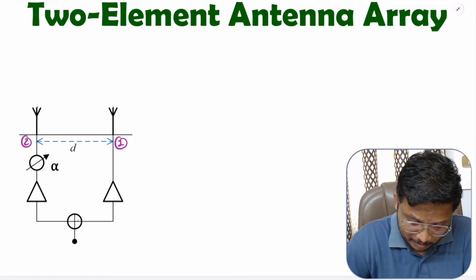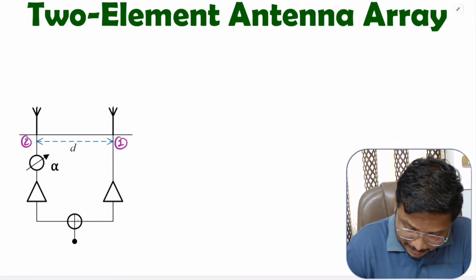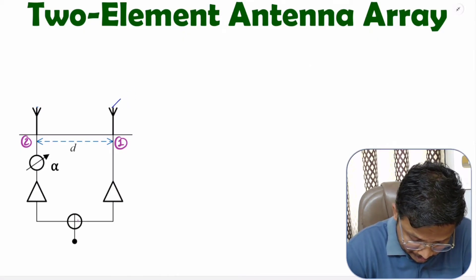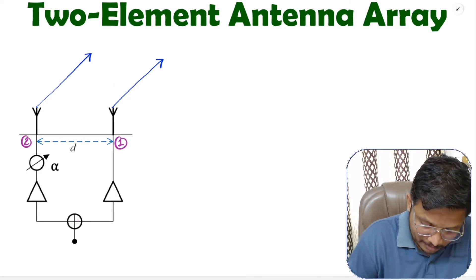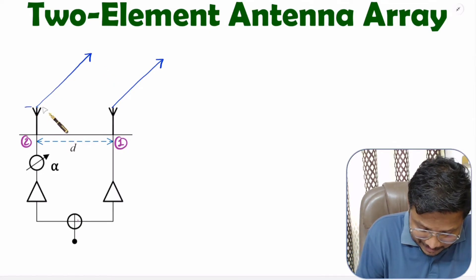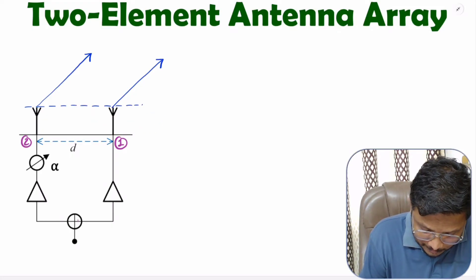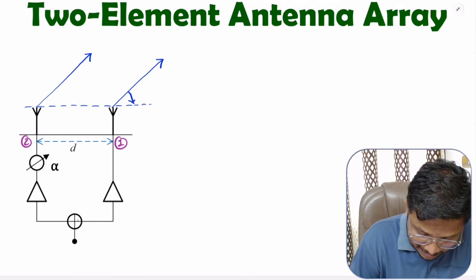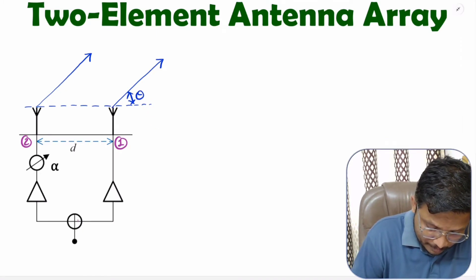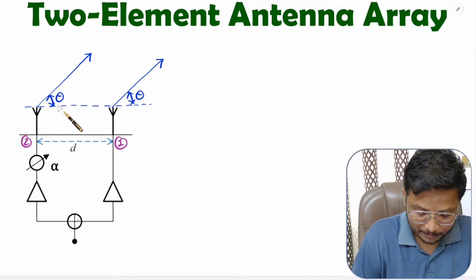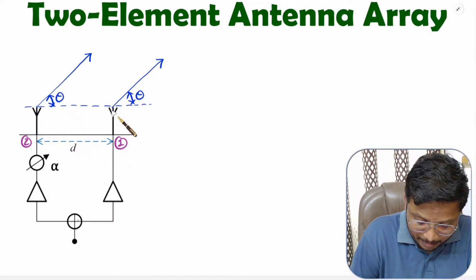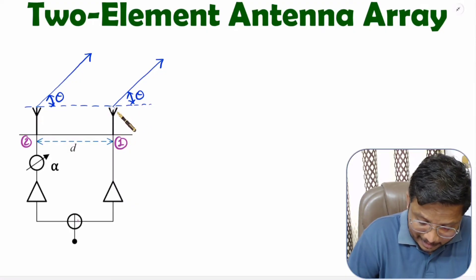Let us assume these antenna elements are radiating in this direction. This is the antenna axis. With respect to the antenna axis, let us say this angle is theta. If you observe this element, which is the reference element, it is radiating in this direction.